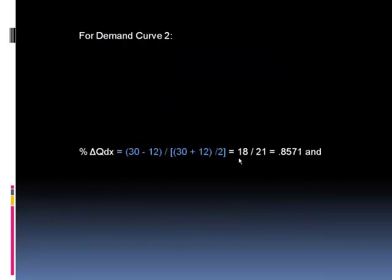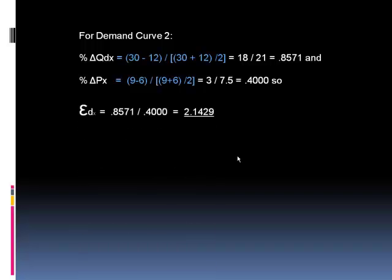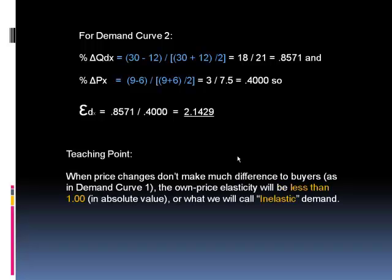Let's look at demand curve number two. Here we saw that the quantity changed from 30 to 12, or from 12 to 30. It doesn't really matter which direction you go. So the percentage change was the change, 30 minus 12, divided by the average. This gives us 18 divided by 21, which is .8571. And then percentage change in price, same one we did before, because we were talking about the same price change, .400. And so to find the price elasticity of demand, percentage change in quantity divided by percentage change in price. In this case we get 2.1429. Make sure you follow the math there.